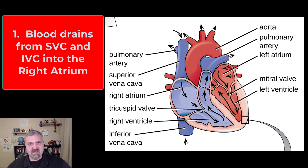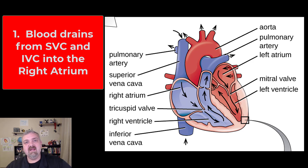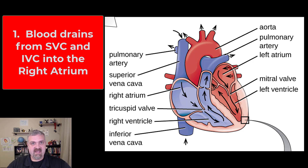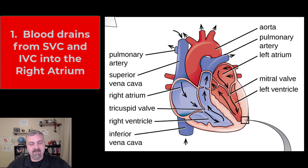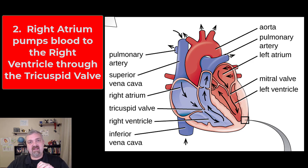I always like to start with the right atrium as our first chamber. The first step is that blood is going to fill the right atrium from the superior vena cava and the inferior vena cava. All the blood below the heart is going to drain back into the right atrium through the inferior vena cava, and all the blood above the heart is going to drain back into the right atrium from the superior vena cava. When the right atrium contracts, it's going to help to fill the right ventricle.